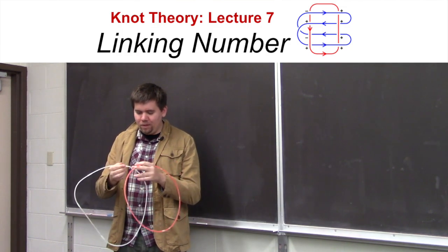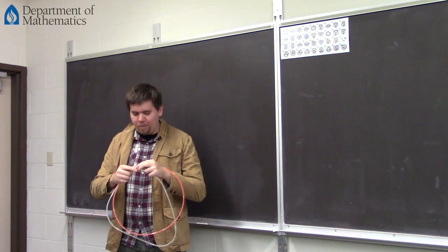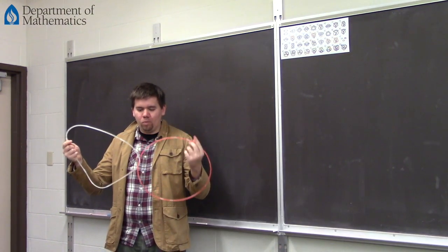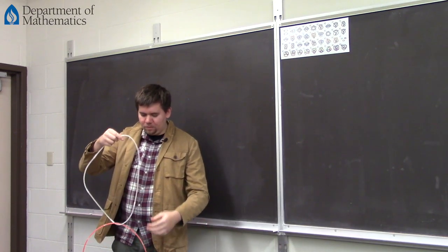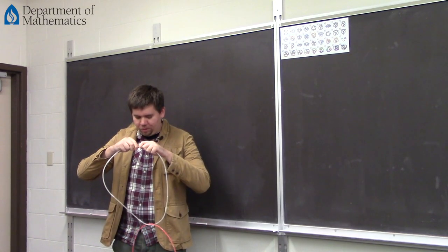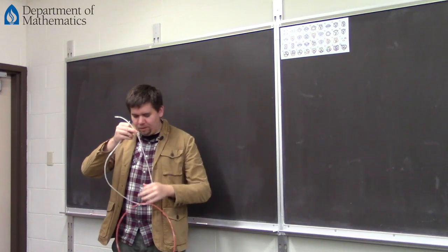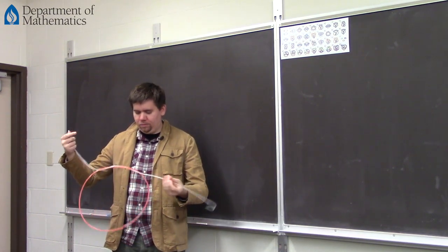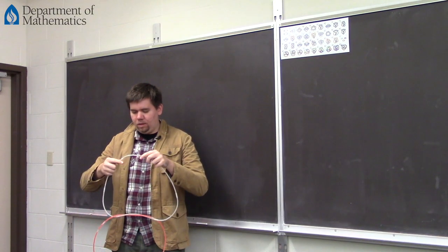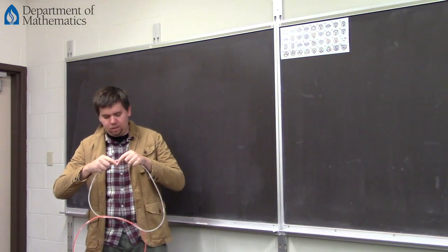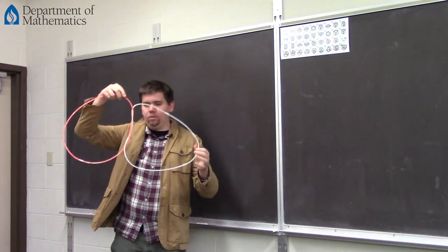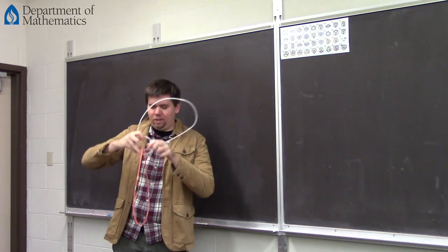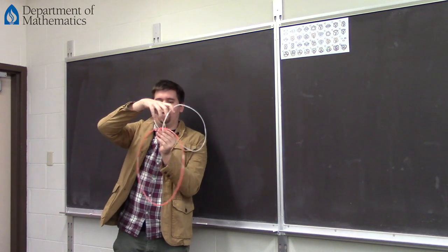If you want to say it links together once, that would probably look something like this — it just goes through it once. What would it look like to link through it twice? Well, instead of just linking around once, you might think it links around two times. And now you can see how this link links with him twice. You can round it out and really see it — it goes around it twice.